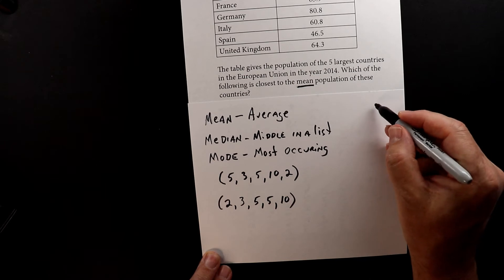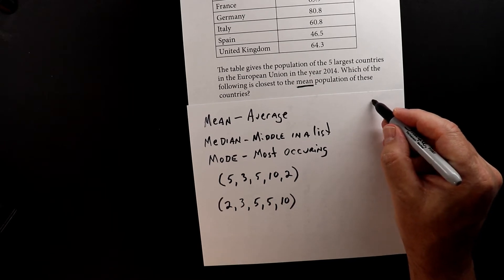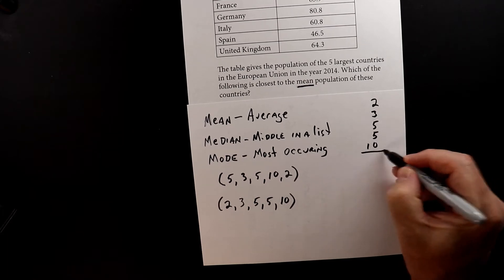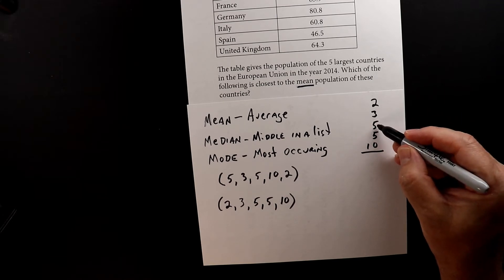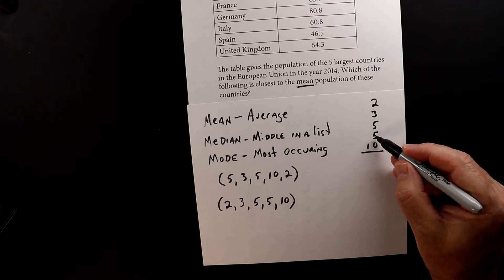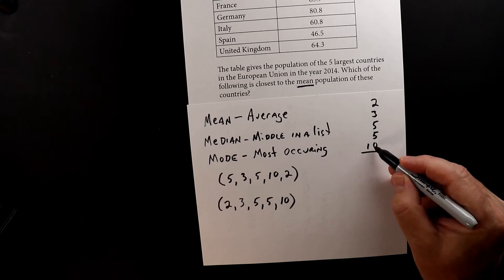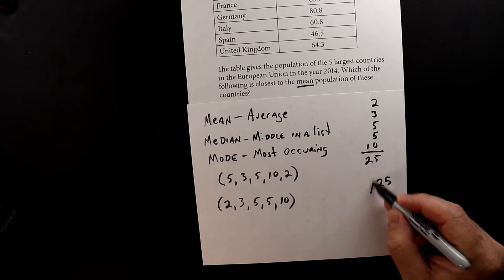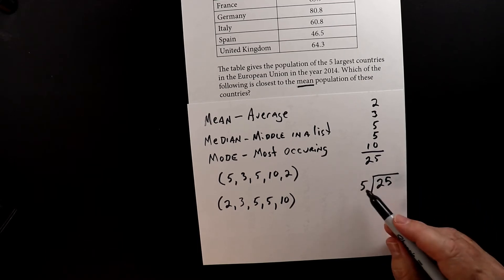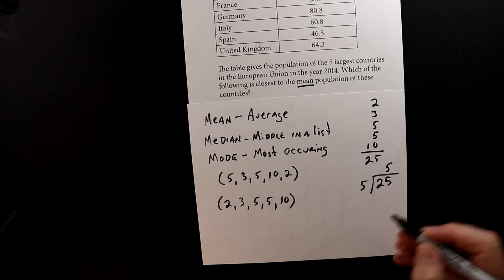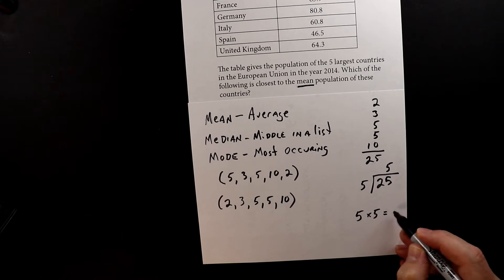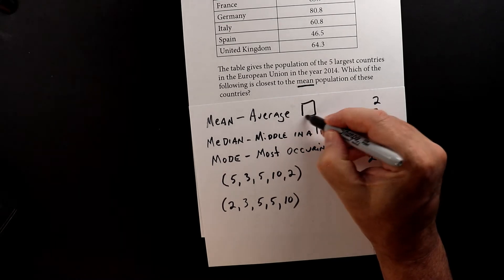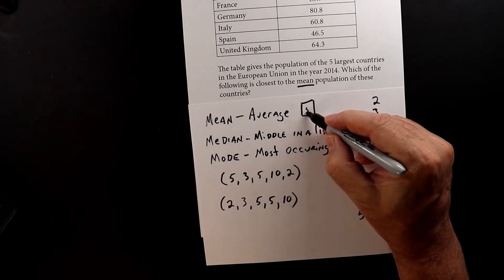What we're going to do to find the average is we're going to add up all these numbers and then divide by five. So we're going to find the total and then divide by the number of elements. So we're going to add two, three, five, five, and ten. Two plus three is five, and another five is ten, and another five is fifteen, and then fifteen plus ten is twenty-five. So we have twenty-five, and we're going to divide it by five. Five goes into twenty-five five times. So the average of this list is five.